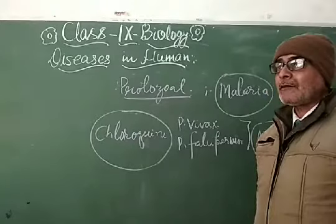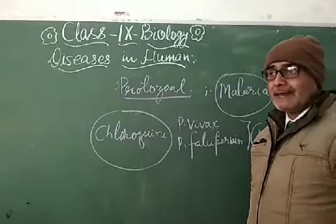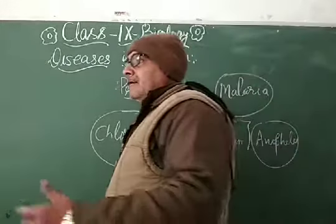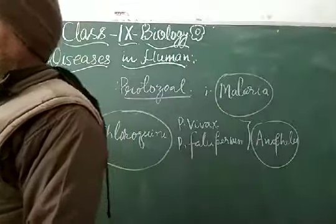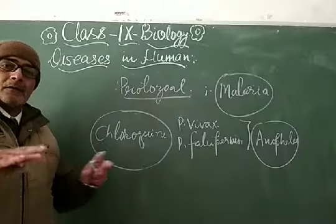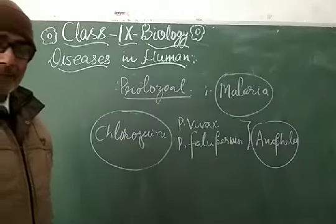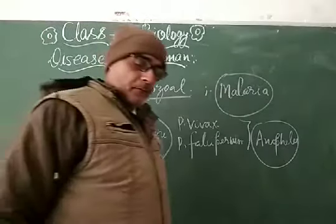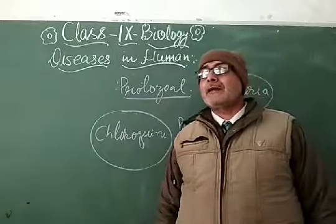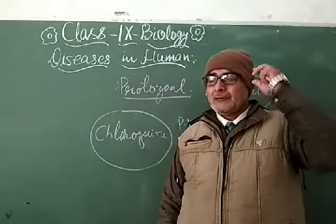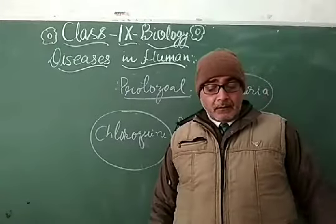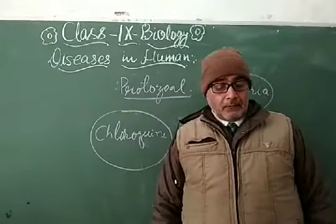Larval control species should be spread throughout ponds, lakes, and other places where water is stagnant. These are the control measures against the malaria vector and malaria parasite. Malaria is a worldwide disease, and in India there is a national program to control it.